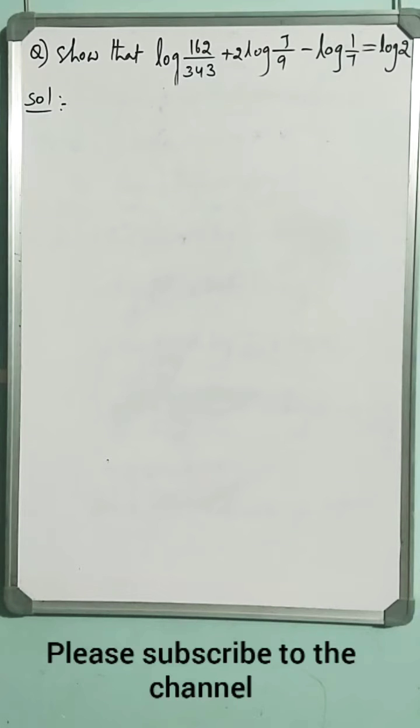Let us solve one logarithmic problem. Show that log 162 by 343 plus 2 log 7 by 9 minus log 1 by 7 is equal to log 2.